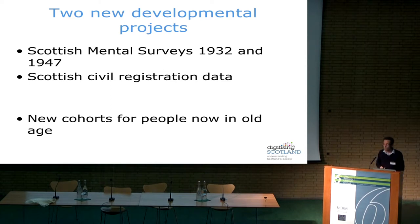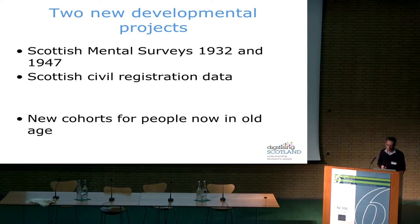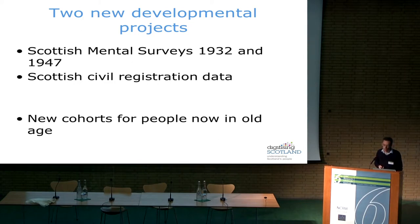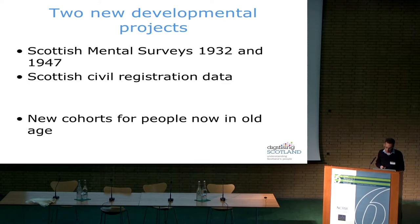If a cohort study wasn't started at the time, we have no ability to look back unless we go back to administrative records. In some ways this is our only way of looking at what's happening to people who are now old, back in their childhood. As these examples show, if you can look at intergenerational effects, you can explore even more interesting questions — something you couldn't do with new cohort studies unless you waited possibly hundreds of years.